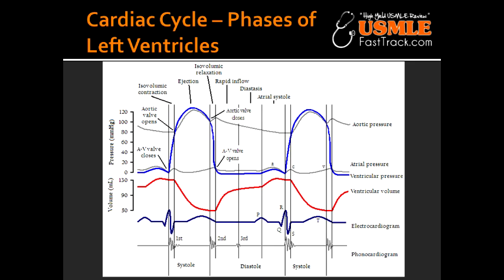This is basically how blood enters and leaves the left ventricle. This picture is clinically very important because it tells you what happens with changes in contractility, preload, or afterload in different situations. You should use it as a reference to answer questions about volume and pressure changes when preload, afterload, or contractility are altered.